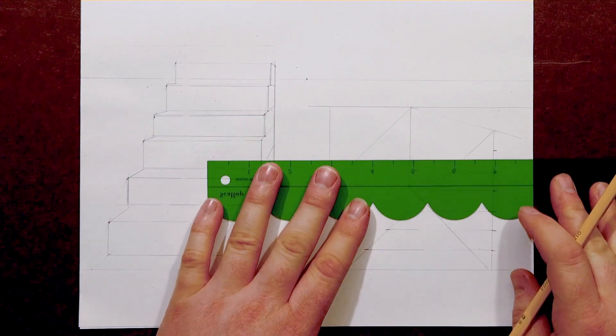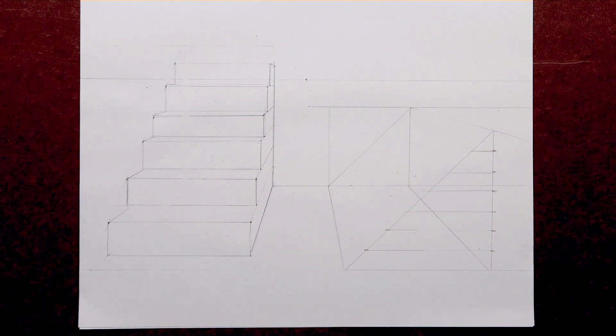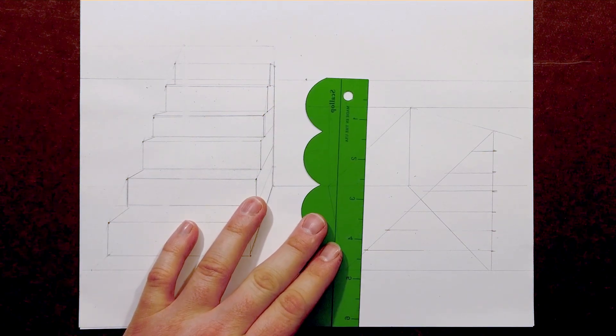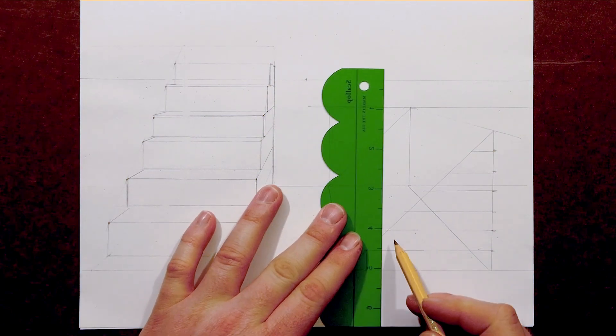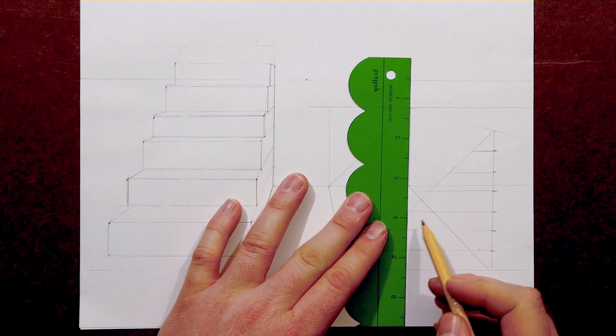As you finish those up, we're then going to take a vertical line at each new intersection point and drop it down to the lower level. Keep those nice and vertical. That will keep your illusion in line.